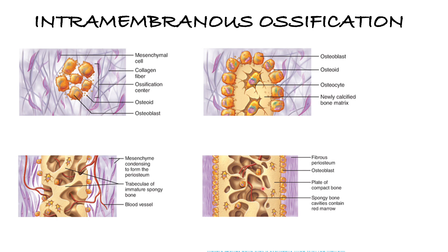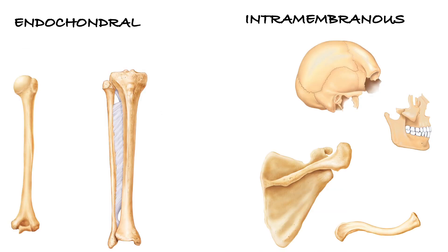In the final step, the trabeculi are remodeled and replaced with compact bone — hard bone — while immature spongy bone remains in the center and later becomes mature bone that will fill the red bone marrow. In summary, endochondral ossification is used to make long bones — and that includes not just limb bones but also fingers, palms, and carpals. Intramembranous ossification is mostly used for flat bones like the skull and clavicle and scapula. Endochondral ossification forms bones like the femur, tibia, fibula, and humerus.